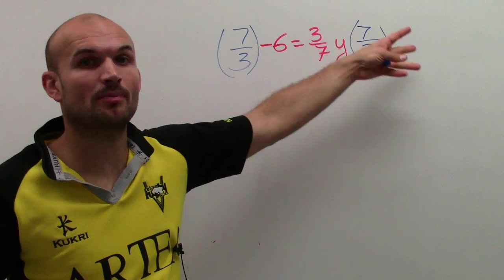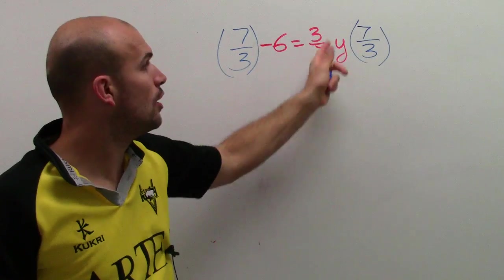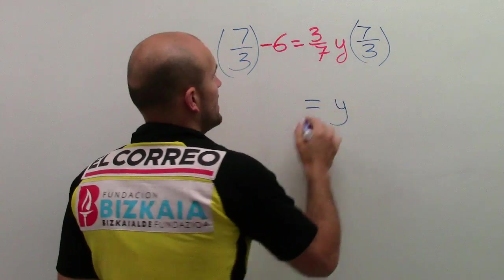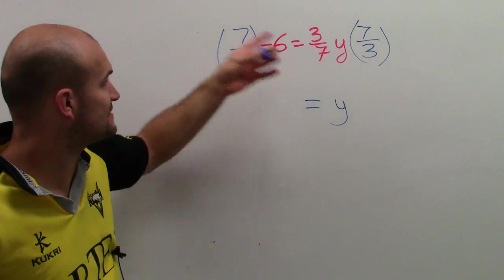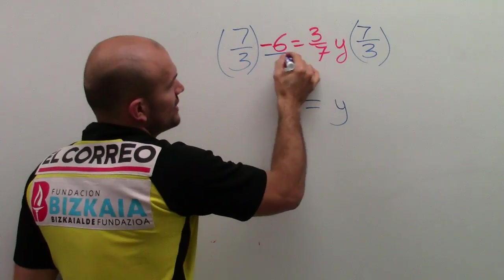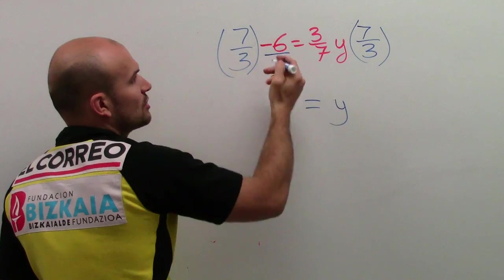So a number multiplied by its reciprocal equals 1. 1 times y equals y. Then I need to multiply this negative 6 times 7 thirds. So I transfer this to a fraction, multiply my fraction across.